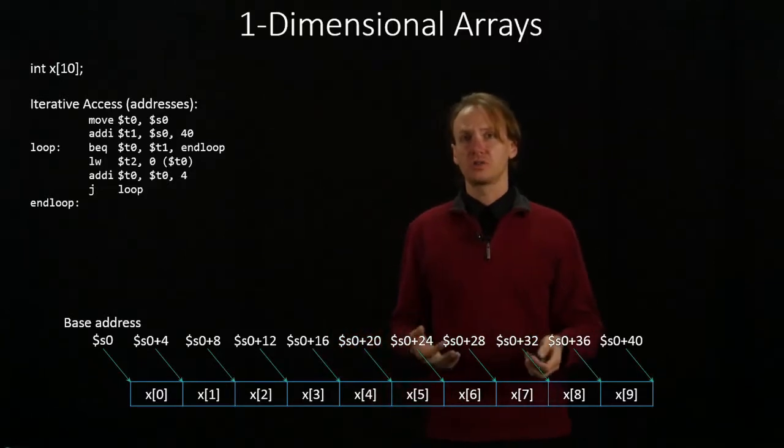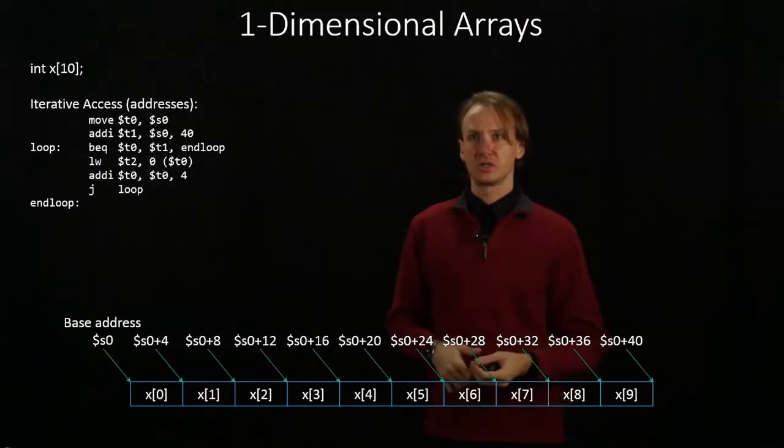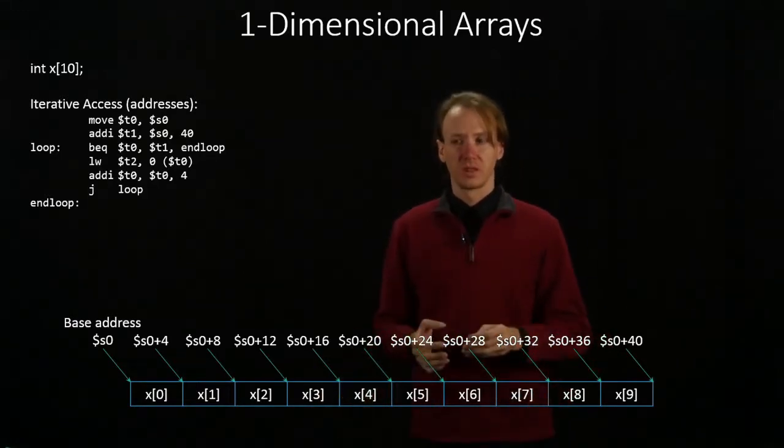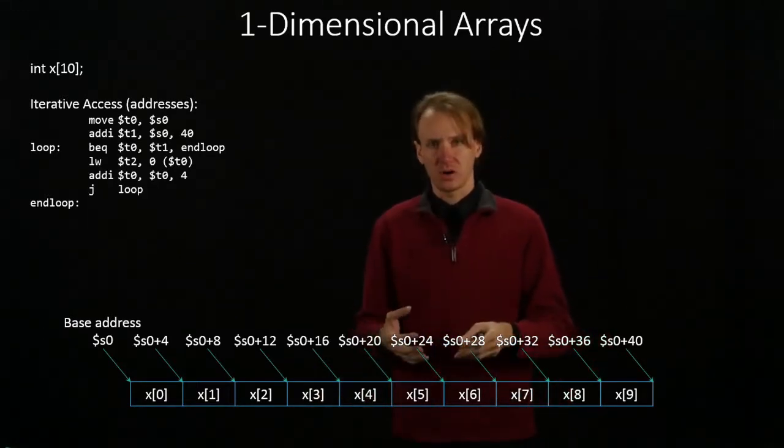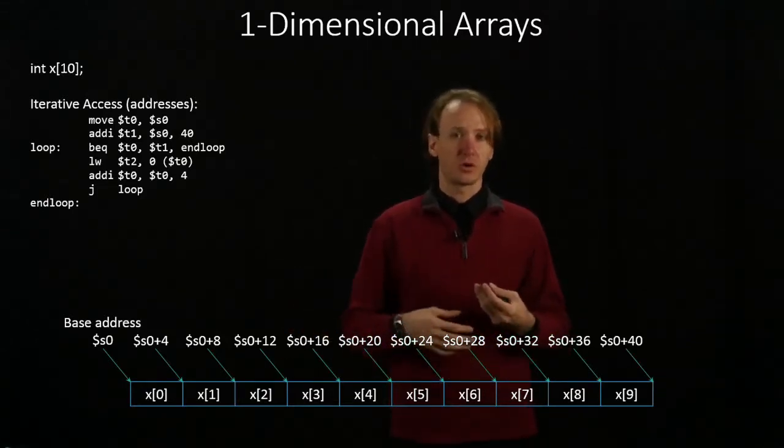I could also do this by working with these as addresses. And you'll notice this code is slightly shorter. This is because I'm not going to have to do all of that scaling by my data size. I can just walk down in blocks of four instead.